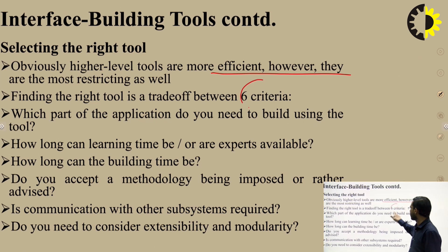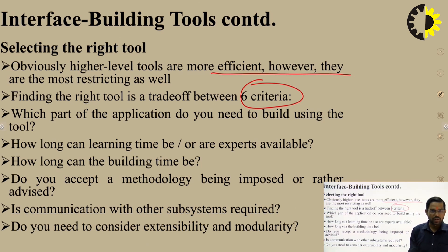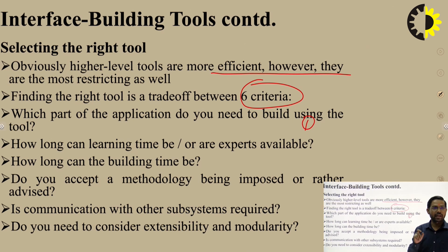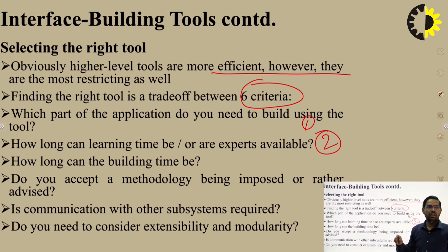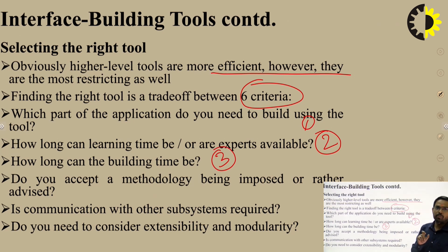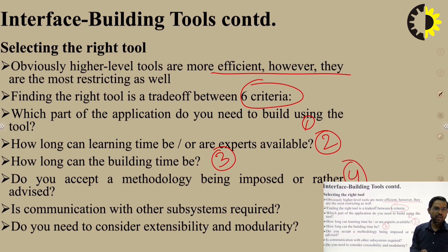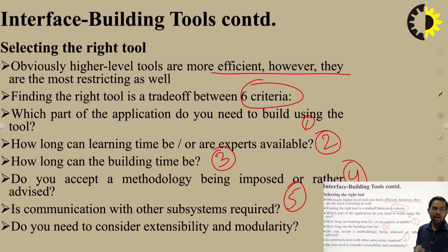Selecting the right tool: higher-level tools are more efficient but more restrictive. Finding the right tool involves a trade-off among six criteria: (1) Which part of the application do you need to build? (2) How long can the learning time be? (3) How long can the building time be? (4) Do you accept a methodology being imposed rather than advised? (5) Is communication with other subsystems required? (6) Do you need to consider the extremity of the model?